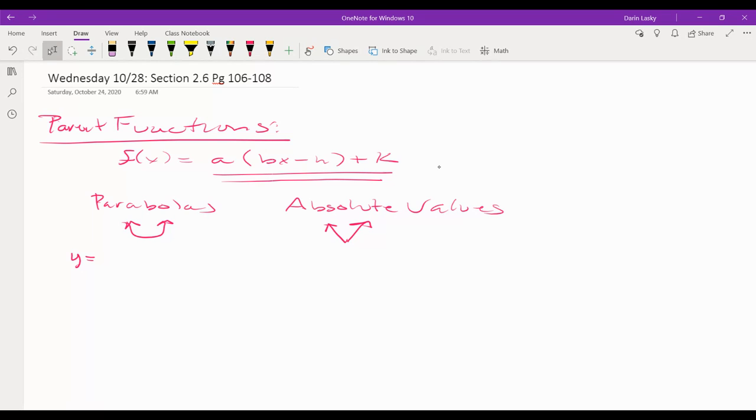When we look at their parent function, y is equal to a times x minus h squared plus k. And this one is y equals a times the absolute value of bx minus h plus k. Let me change this here real quick. I'm going to rewrite that - a times bx minus h.